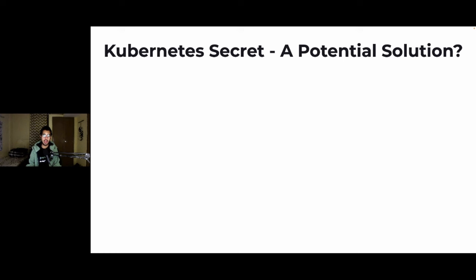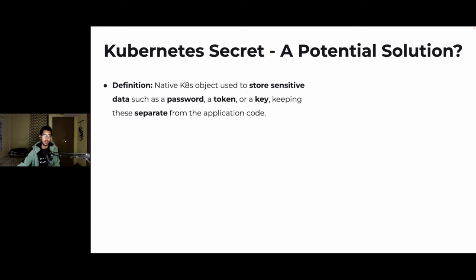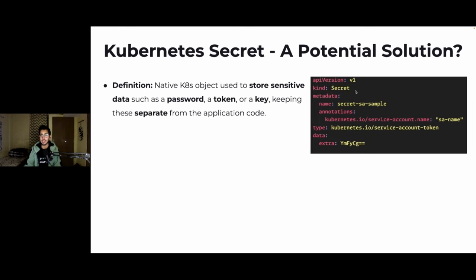Let's talk about Kubernetes secrets. It's a native Kubernetes object that Kubernetes provides to store secrets so our application can access them. The question is: is it a potential solution we can use with our GitOps workflow? It's a native Kubernetes object used to store sensitive data such as passwords, tokens, and keys, keeping them separate from the application code. The important thing to note is that Kubernetes secrets are base64 encoded — the value stored is base64 encoded, and that is their default behavior.